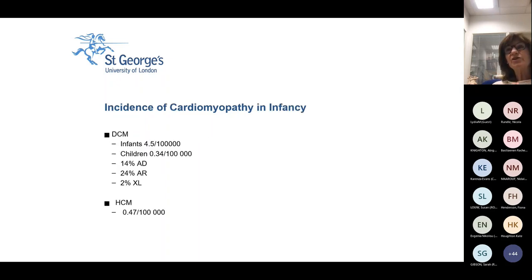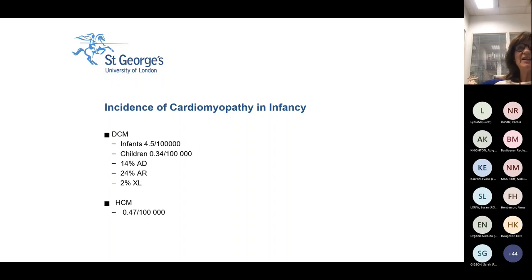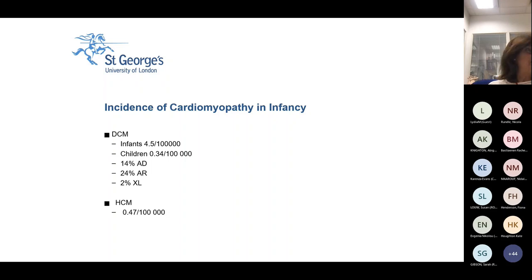The overall incidence of dilated cardiomyopathy is much higher in infancy — in the first year of life with an incidence of 4.5 per 100,000 — whereas in older children it is much rarer at about 0.34. About 14% are due to autosomal dominant diseases, about a quarter to date have been found to be due to recessive diseases, and I suspect more will emerge. About 2% are X-linked. The incidence of hypertrophic cardiomyopathy is much lower in the paediatric population.